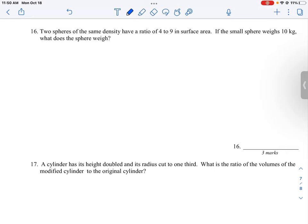Let's look at question 16. This is a different type of problem because they're giving you a different property to look at. We have two spheres which have the same density and they have a ratio of 4 to 9 in surface area.